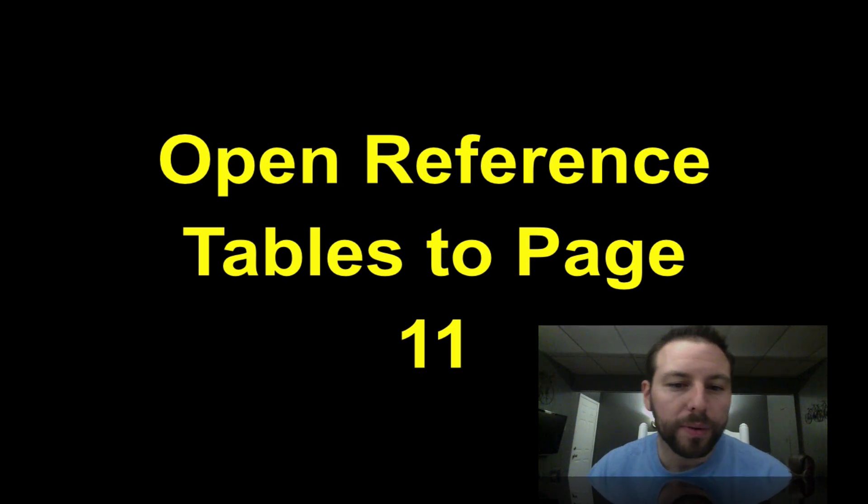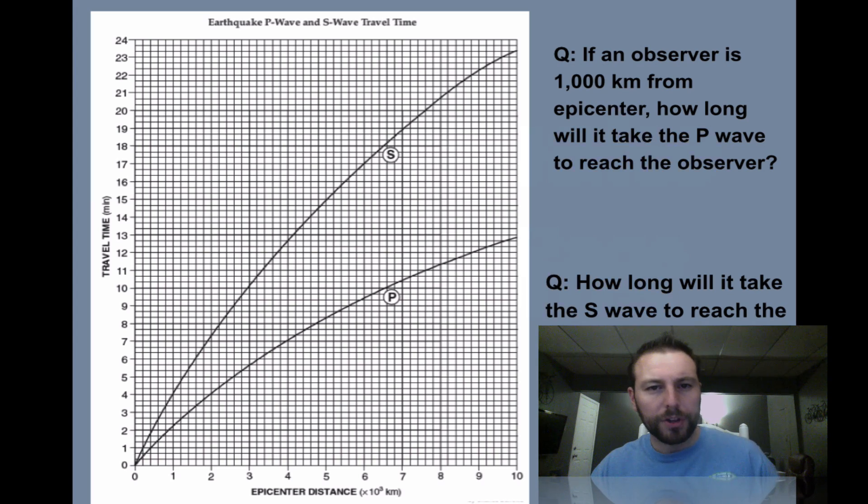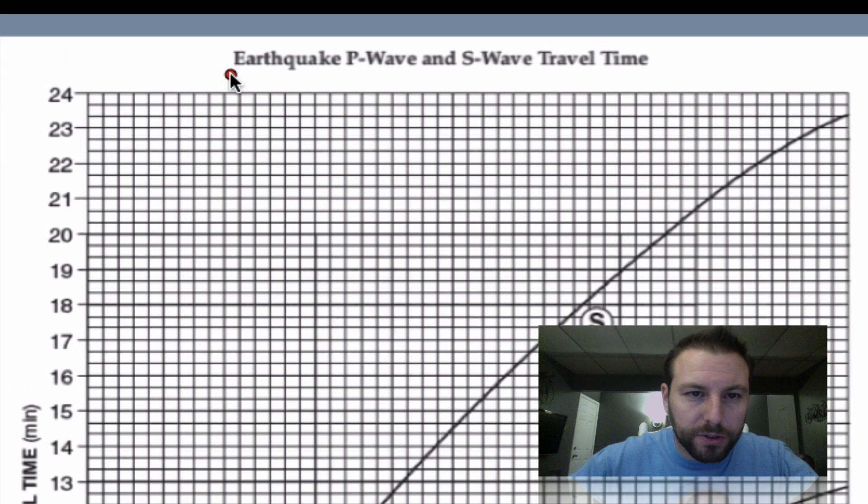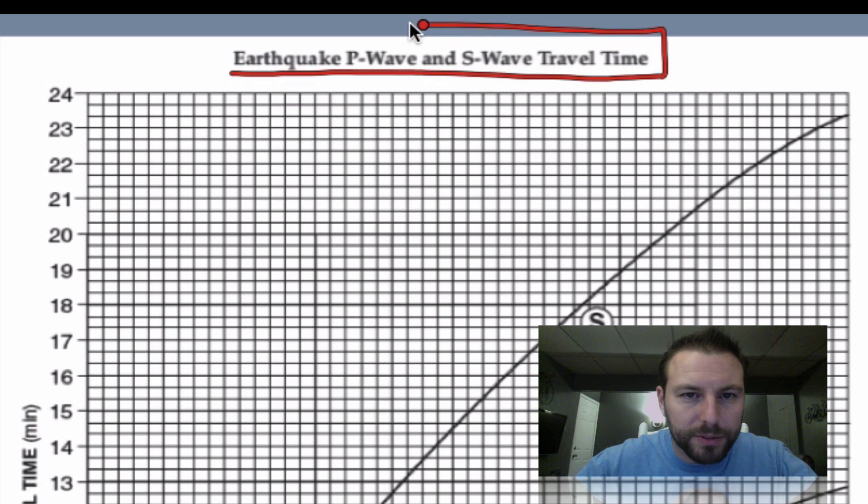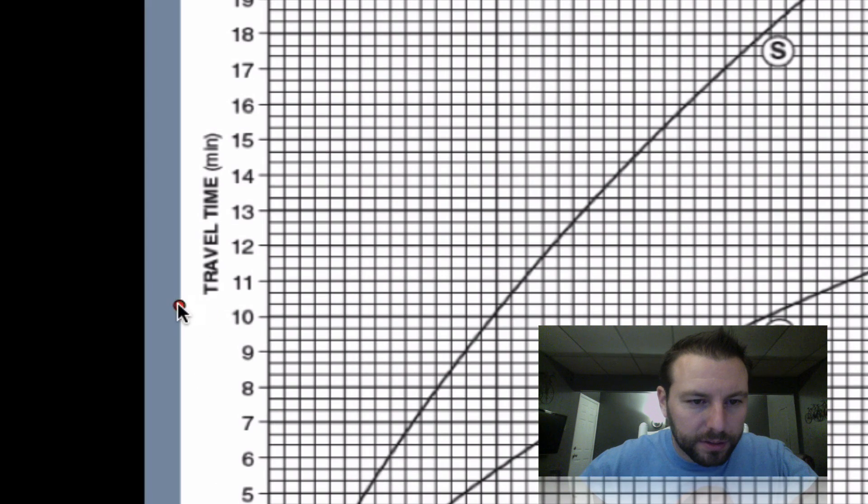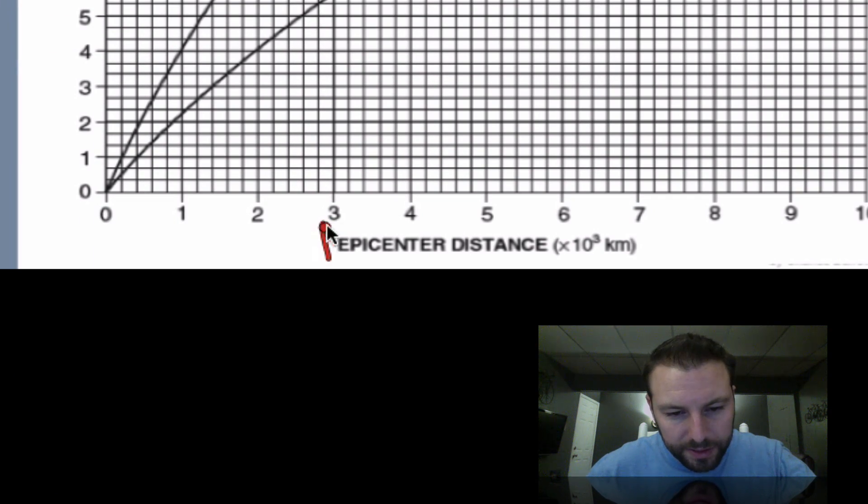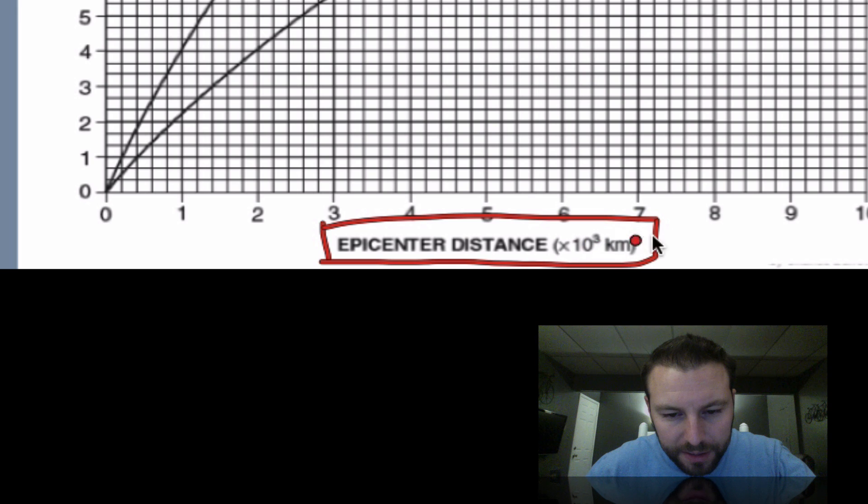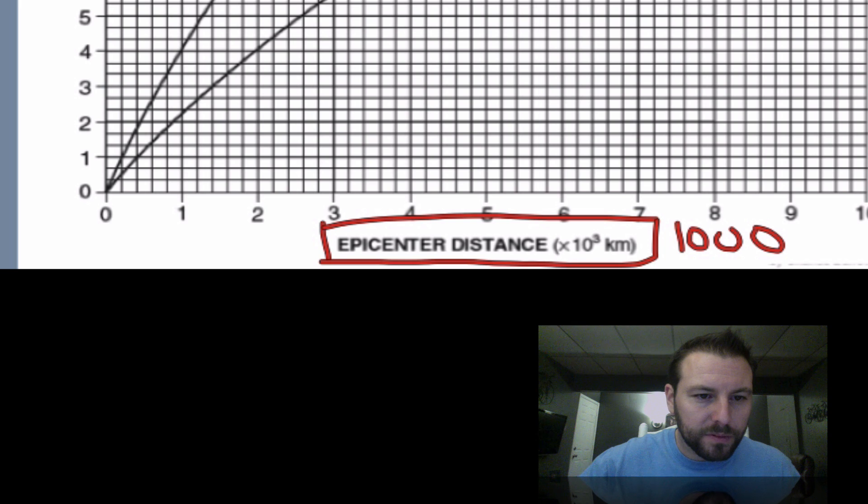I'd like you to open up to your reference table to page 11. When you do, you'll see this chart right here. It says earthquake P and S wave travel times. It tells us here's our travel time, epicenter distance on our x-axis. Something to note about it, it's times 10 to the third, or 1,000 kilometers is each part. Travel times in minutes.